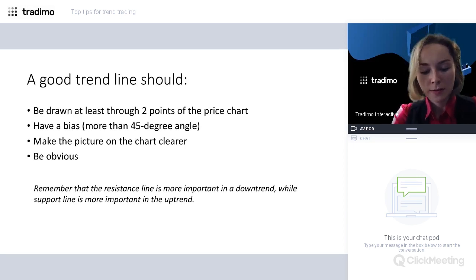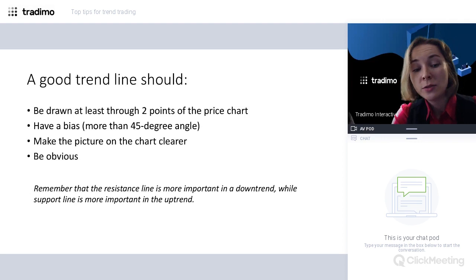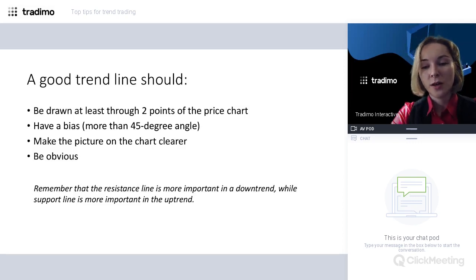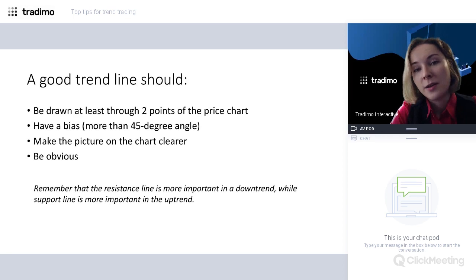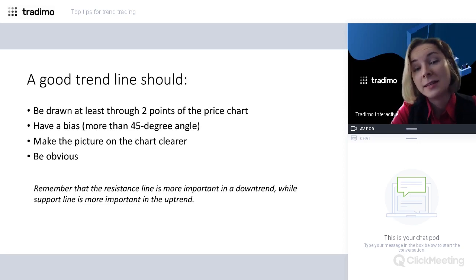Trend lines should have a bias — horizontal support or resistance levels drawn through highs and lows are just levels, not trend lines. A line has a bias, and it is generally thought this angle should be more than 45 degrees. In practice, when connecting two points with a trend line, the distance between them should be about 20 to 30 candlesticks or bars. Trend lines are aimed to make the picture on the chart clearer, not more complicated.